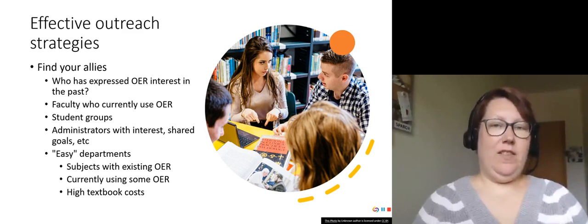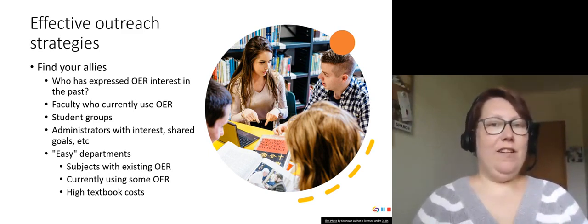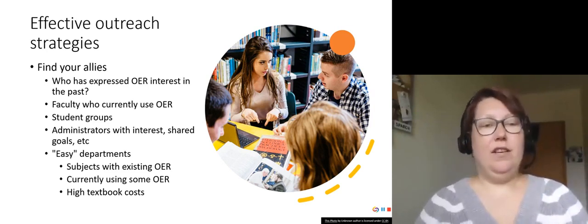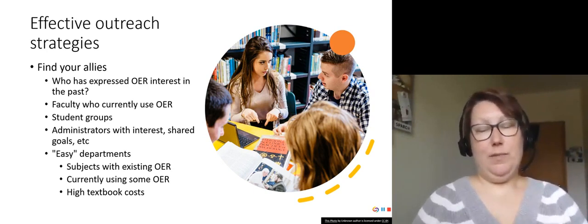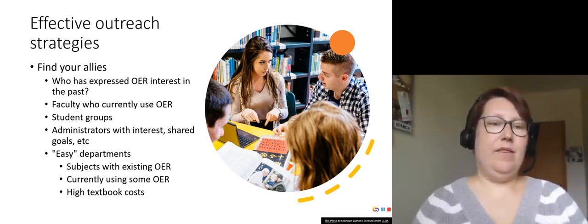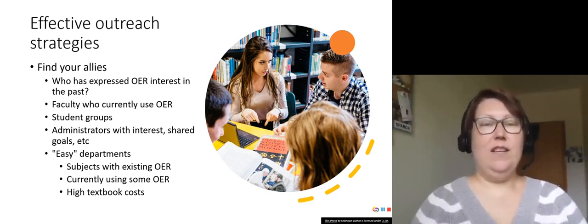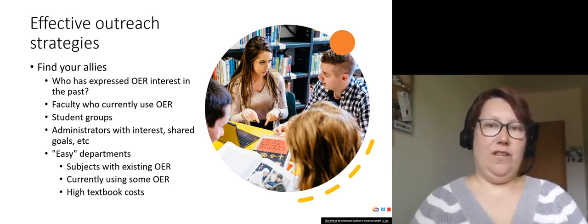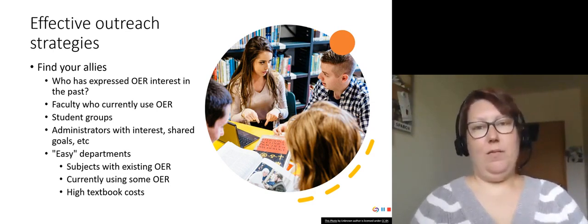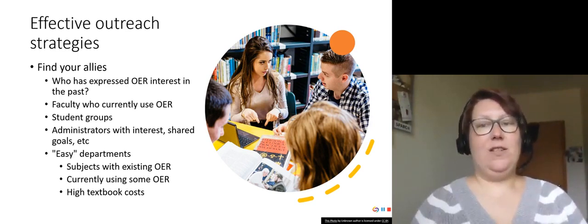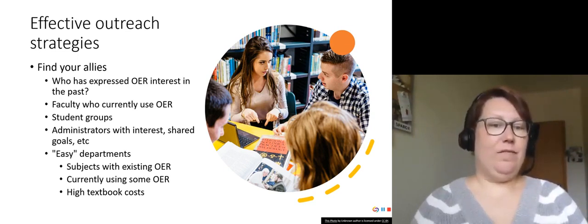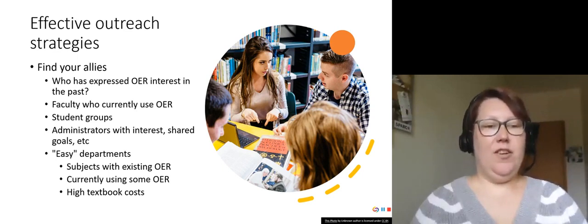Effective outreach strategies. Next, we need to find our OER allies. We've identified all the possible stakeholder groups, but who can we reach out to first? Who has expressed OER interest in the past? This could be a specific instructor or an entire department. It could be faculty who currently use OER or those who use resources like OpenStax and may not be aware that that's exactly what they're using. Student groups are another great place to reach out to. Students have a real interest in textbook costs as well as ways that they can disrupt the market through their advocacy. Administrators with shared goals that OER could help address, which we talked about in the last slide.